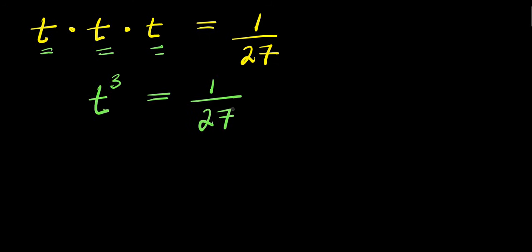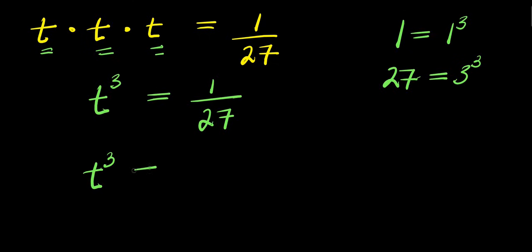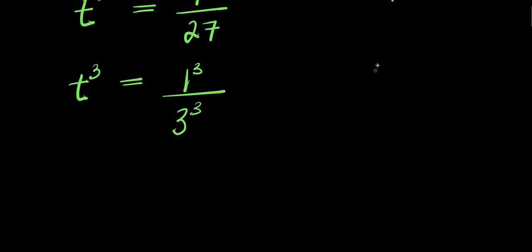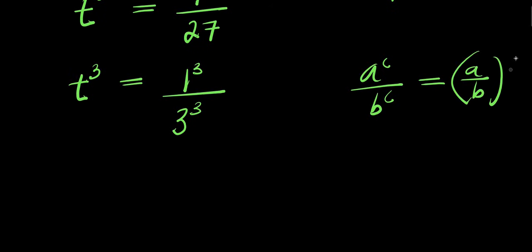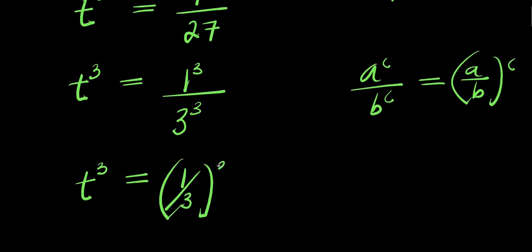Divided by 27. Now I can express 1 as 1 to the power 3, and also I can express 27 as 3 to the power 3. So I have t to the power 3 equals 1 to the power 3 divided by 3 to the power 3, that is 27. If you have a to the power c divided by b to the power c, this equals a divided by b to the power of c. So t to the power 3 equals 1 divided by 3 to the power of 3.